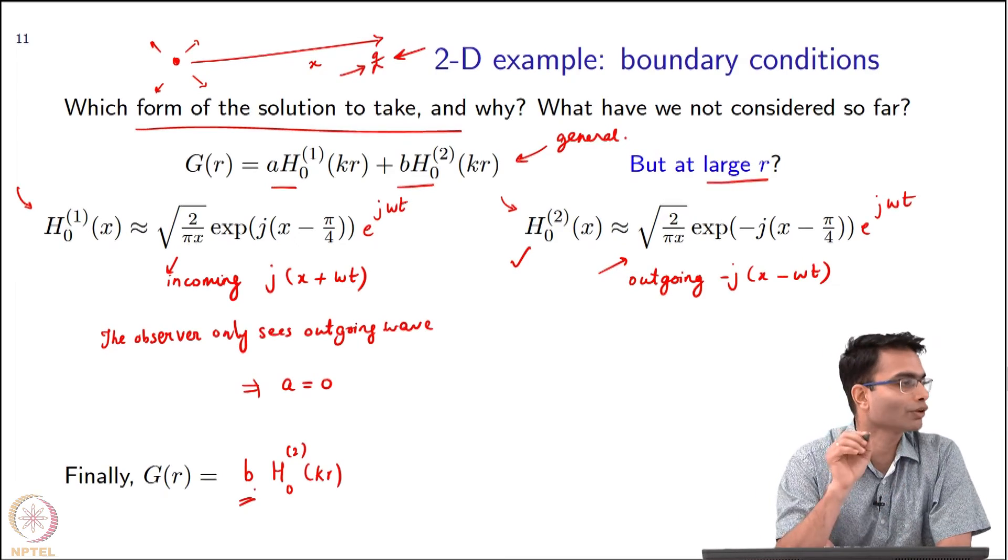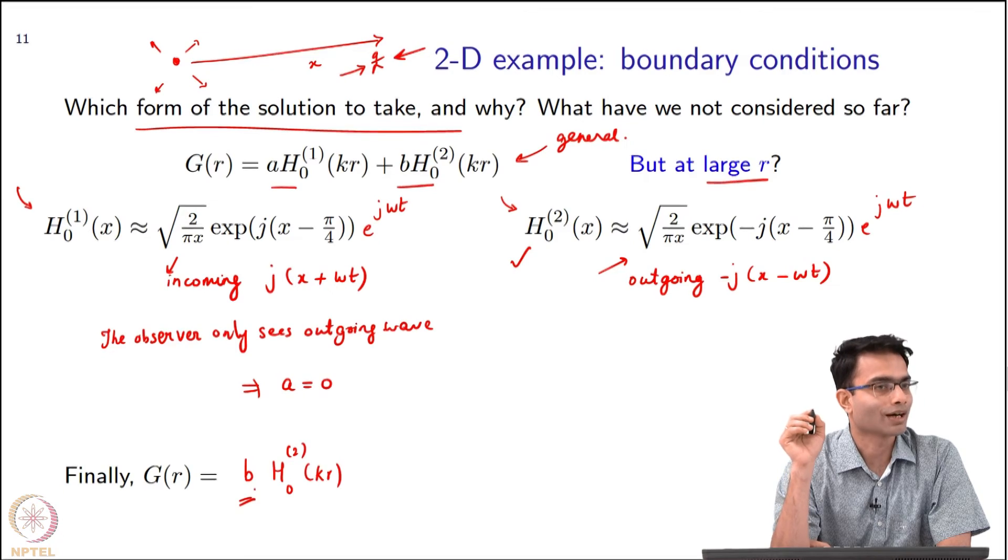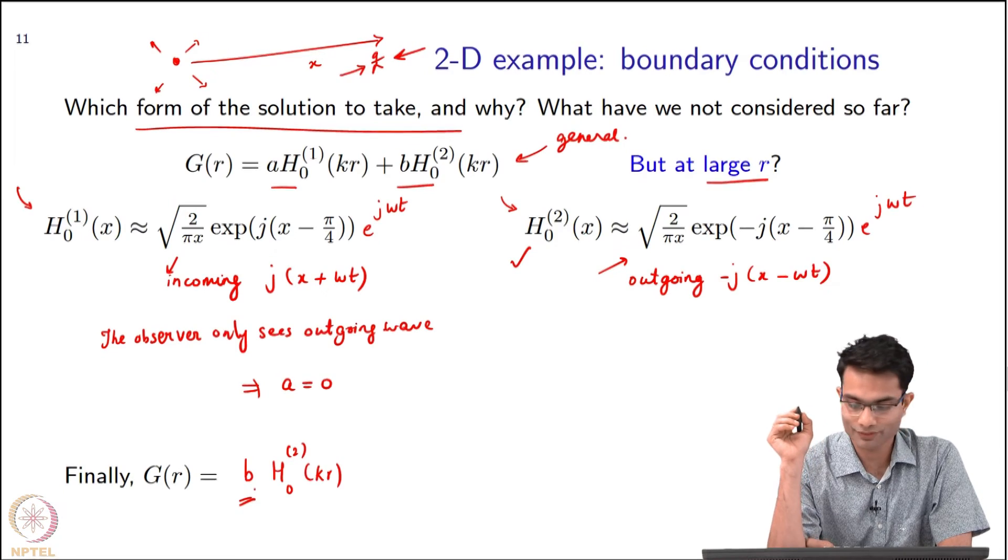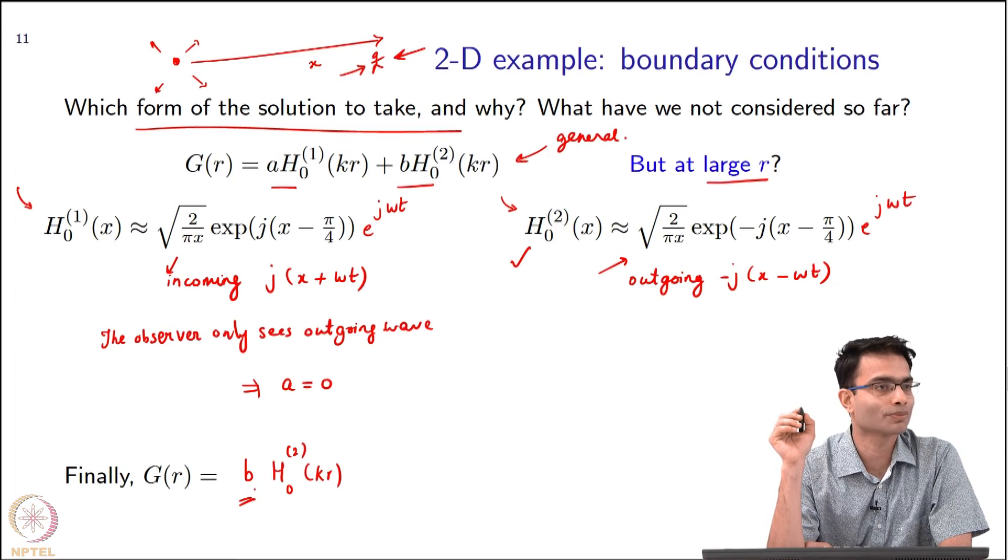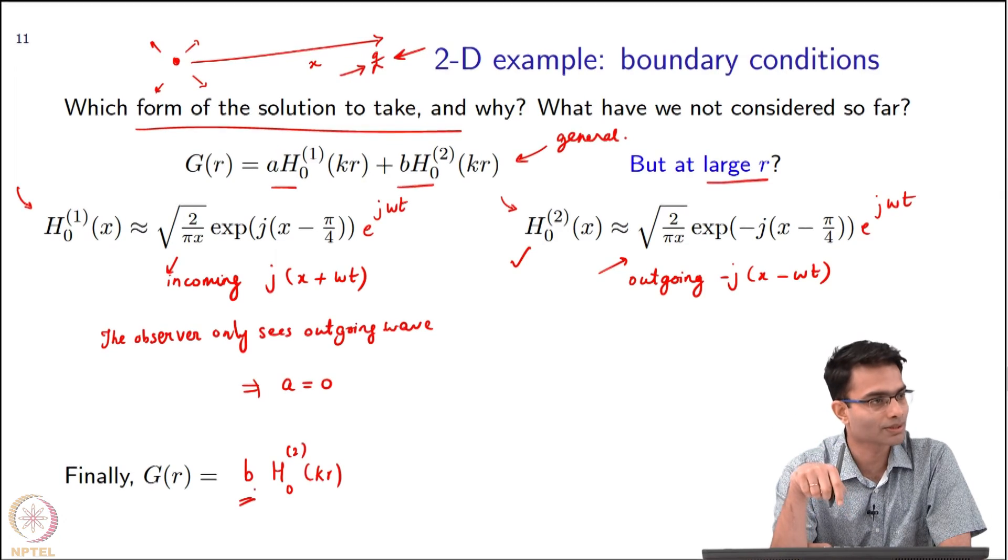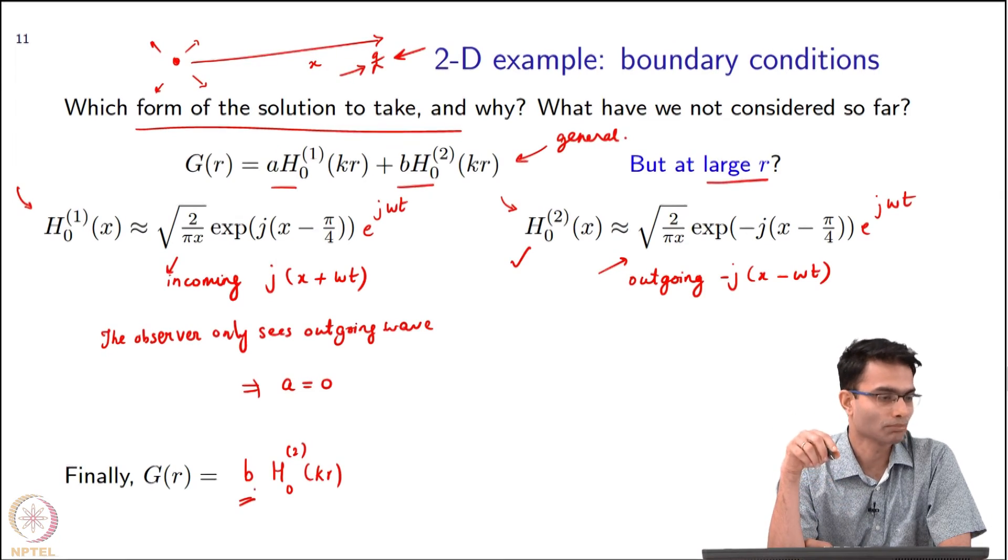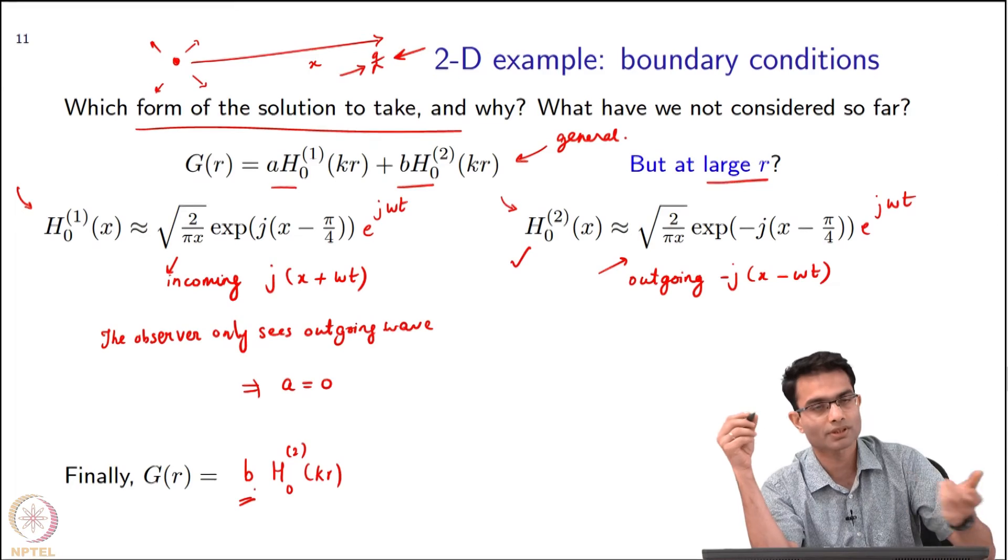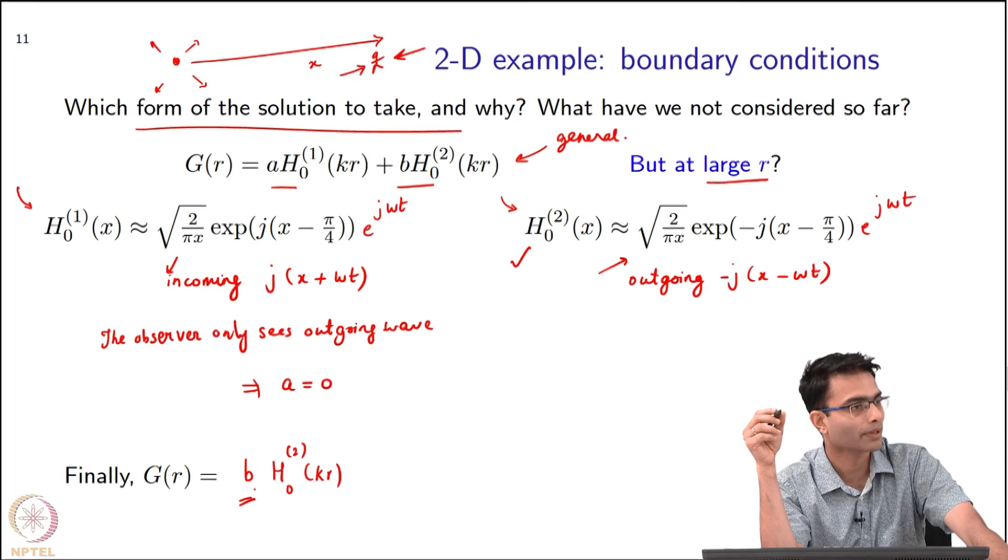What is the thing that we have been avoiding all along? r equals zero. And we have good reason to avoid r equals zero because as we found out, the Bessel Y function plunges to infinity, minus infinity. But if I want to get the complete solution, there is no escape. I have to go to the origin now.